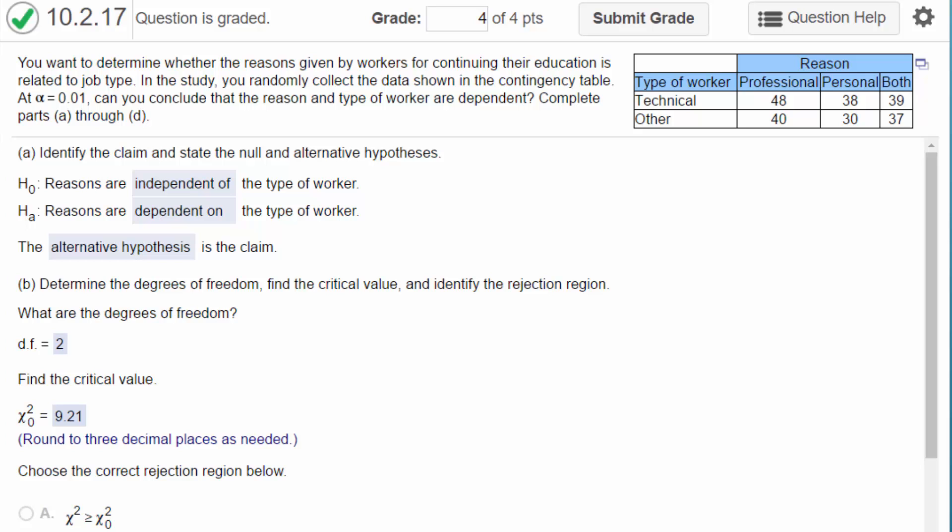Reading the problem here, we're given some data, a table, a two-way table, since we've got categories in the vertical first row and more categories in the horizontal. It's a two-way table.